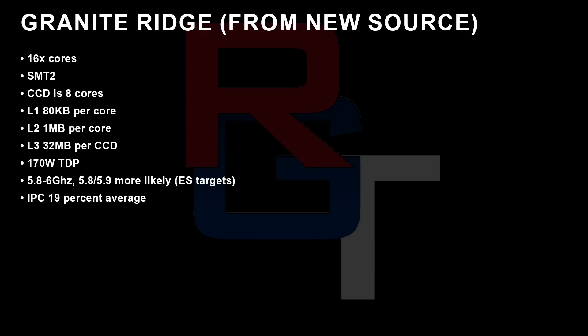Granite Ridge info from the new source: 16 cores and SMT2 — I really feel that this is a lock at this stage. The CCD is unsurprisingly 8 cores. L1 is 80 kilobytes per core. L2 remains at 1 megabyte per core, and the size of L3 remains consistent versus the previous generation.